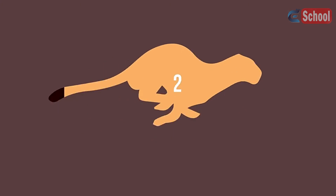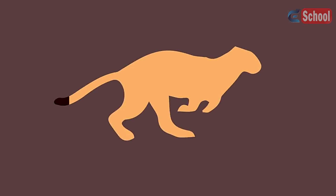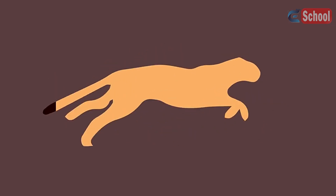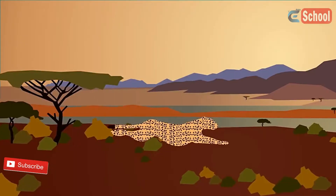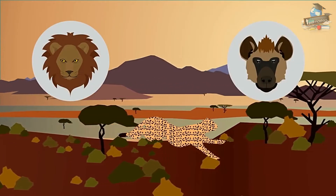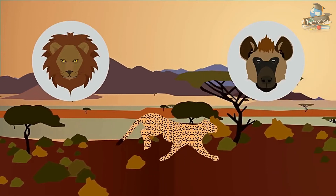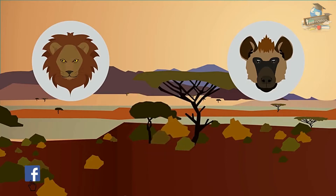Sleek, lithe, and with acceleration speeds that can outstrip a Ferrari, cheetahs are the world's fastest land mammal. But why is it so important for cheetahs to be able to run so fast? Well, one of the cheetah's natural habitats are the savannahs of Africa, where you can find lions and hyenas, who both compete with the cheetahs for prey and sometimes even try to kill them for food. Cheetahs need to be able to outstrip their prey and their predators.